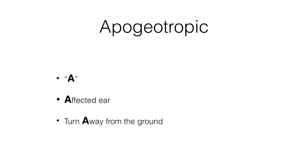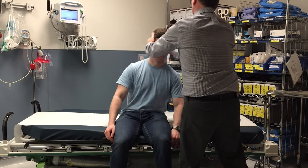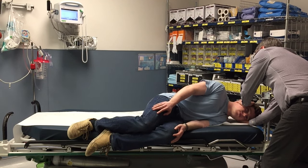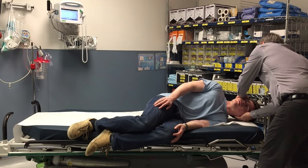For apogeotropic horizontal canal BPPV, A stands for: lie them on their affected ear and then turn their head away from the ground 45 degrees. So if we had a patient with left ear apogeotropic horizontal canal BPPV, as in our elderly gentleman, we would first lie them on their affected left ear for 1 minute, then turn their head 45 degrees away from the ground, leaving them in this position for 2 minutes, and then sit them up.